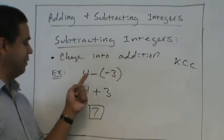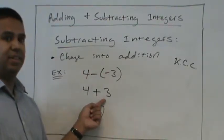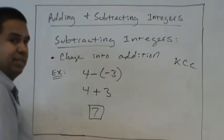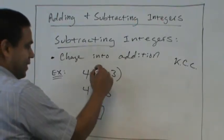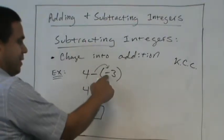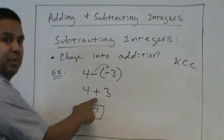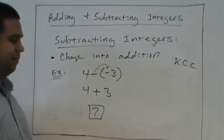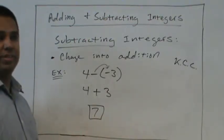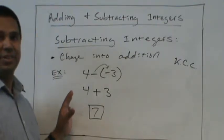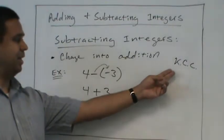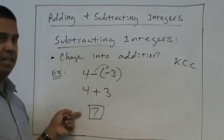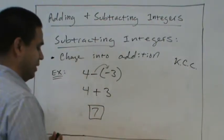If we don't like this idea of keep change change, another way to think of it, right? And we haven't really talked about these rules, but we know a negative times a negative becomes a positive. That's another way to look at it. Okay? Questions on this one? No. Okay. So we'll keep this in mind. Change subtraction to addition, and it's easy. Let's try another one.